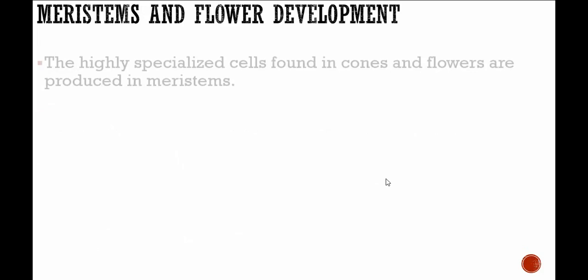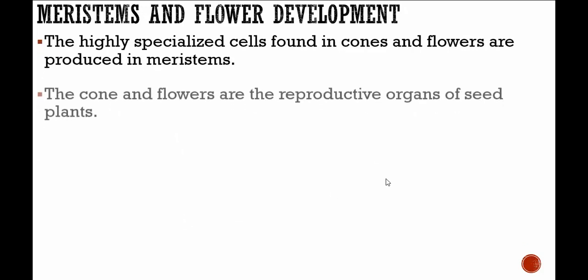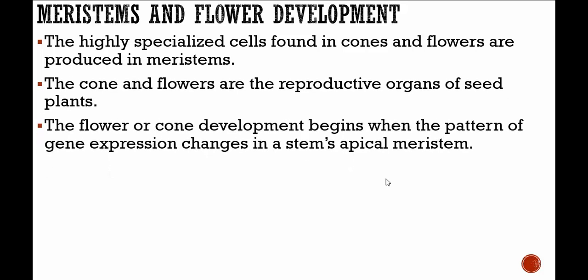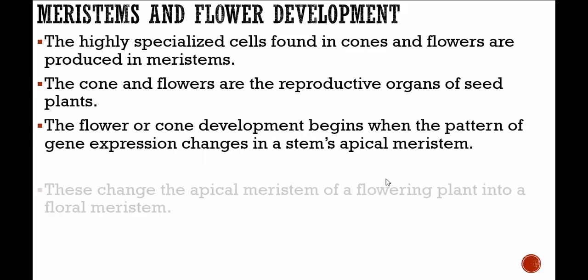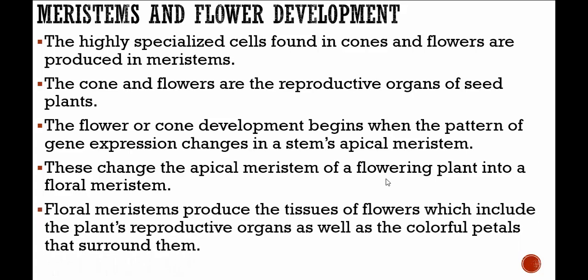The highly specialized cells found in cones and flowers are produced in the meristems. Cones and flowers are the reproductive organs of seed plants. Flower or cone development begins when the pattern of gene expression changes in a stem's apical meristem, changing it into a floral meristem. Floral meristems produce the tissues of flowers, including the plant's reproductive organs as well as the colorful petals that surround them. If you have any questions, leave a comment.